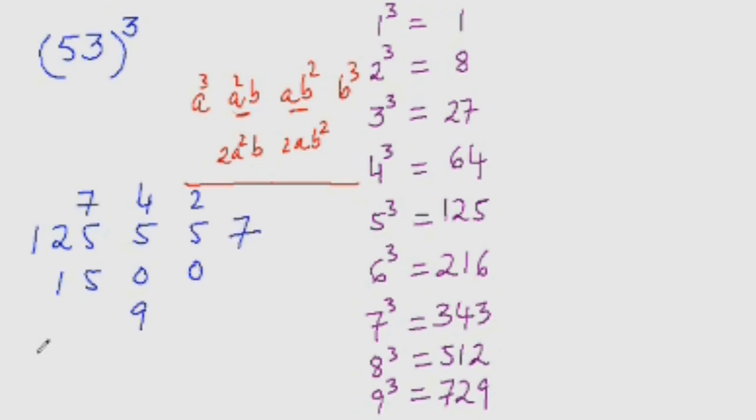Now just add these digits together to get the answer. 7, 5 plus 2 is 7 and 7 plus 1 is 8, 8 plus 5 is 13, 13 plus 5 is 18. So 1 comes here, 1 plus 12 is 13, 13 plus 1 is 14. So this is the answer: 148,877.